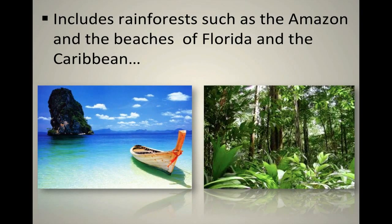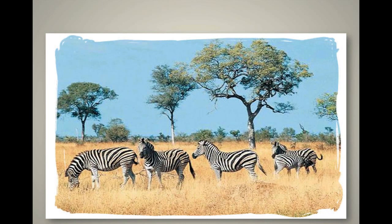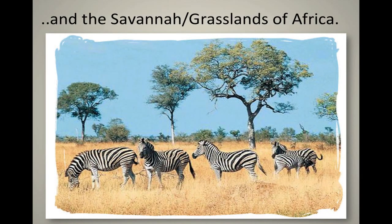More about the tropics: this includes rainforests such as the Amazon, the beaches of Florida and the Caribbean, tropical climates in California, and different parts of Mexico. And even though it doesn't look like the tropics — the vegetation isn't the same, you don't have palm trees — the savannah and grasslands of Africa are also considered a tropical climate.